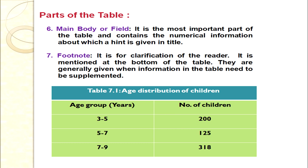The main body of the table contains all the numerical information — for example, values like 200, 125, 318 corresponding to age groups 3 to 5, 5 to 7, and 7 to 9. This is the most important part of the table because it contains the numerical information about which a hint is given in the title.